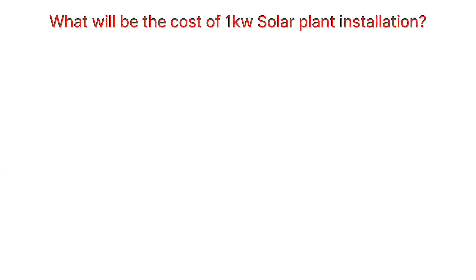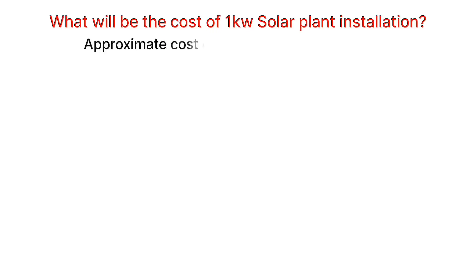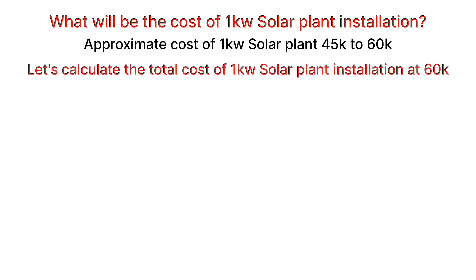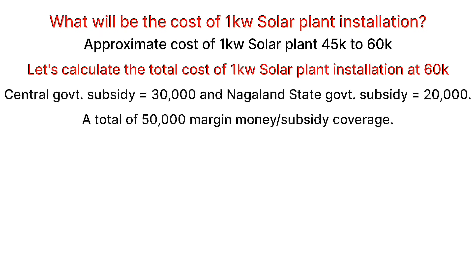Let's calculate an example for 1, 2, or 3 kilowatt systems. Assume we are installing a 1 kilowatt solar plant. The total installation cost would be around ₹45,000 to ₹60,000 or possibly higher.